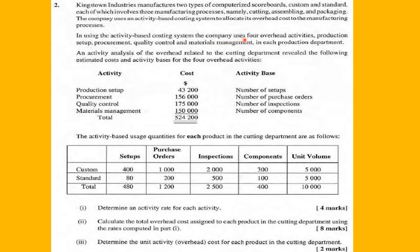Using the ABC system, the company has four overhead activities: production setup, procurement, quality control, and materials management. An activity analysis of the overhead related to the cotton department reveals two tables — one showing the activities and cost pools, showing how much was accumulated in a cost pool for each activity, and the other showing the cost driver or base used to calculate the activity rate, along with total activities and each product's share.